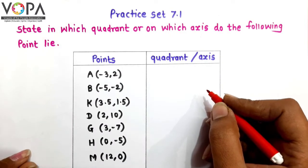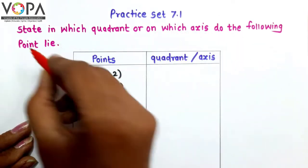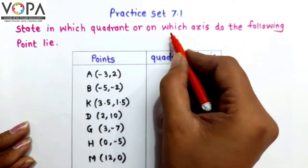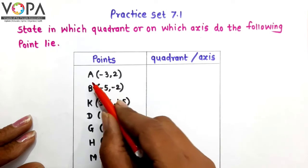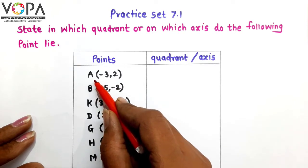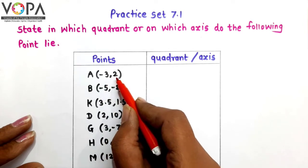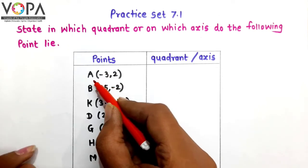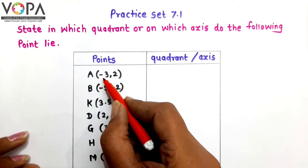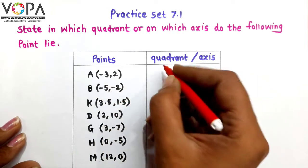We can see the question from practice set 7.1. The question is: state in which quadrant or on which axis do the following points lie. First point is point A, and the coordinates of point A are minus 3, 2. Here the x-coordinate of point A is minus 3 and the y-coordinate is 2. Therefore A lies in the second quadrant.